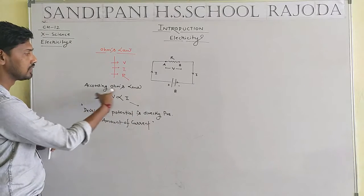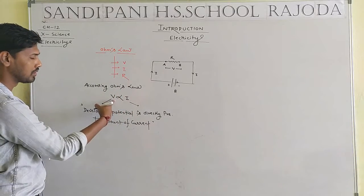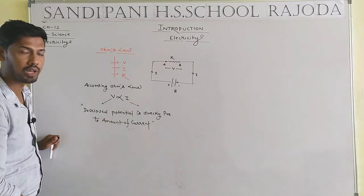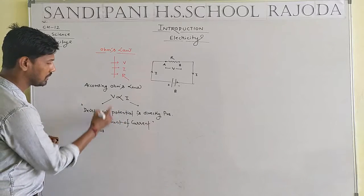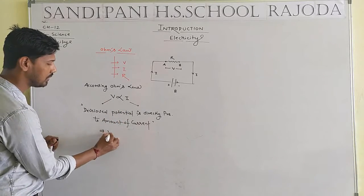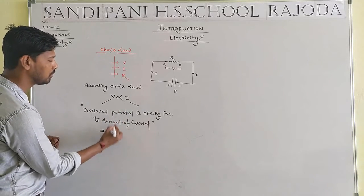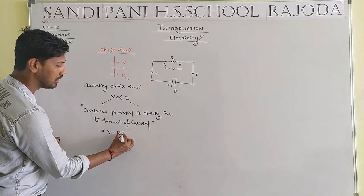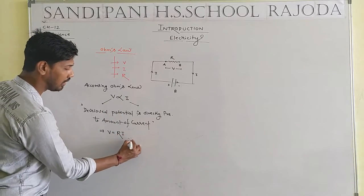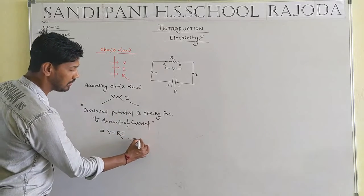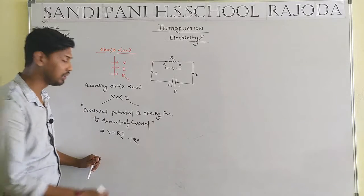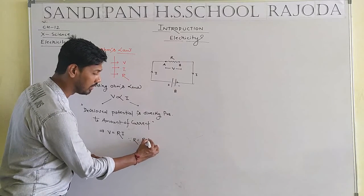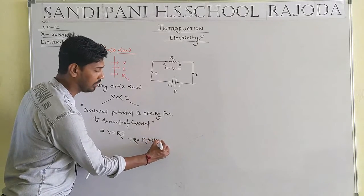This is the statement of Ohm's law: V is directly proportional to I. According to the concept of science, the proportional sign is replaced by a constant. Here, R is that constant, defined by the word resistance.